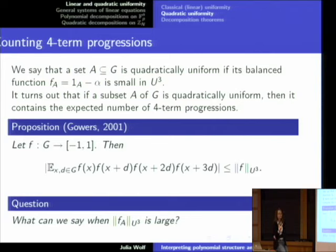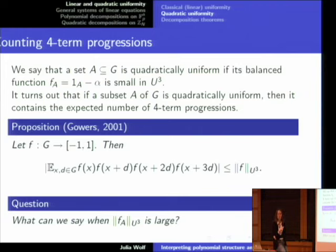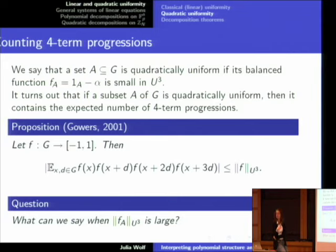This was one part of the dichotomy we saw for three-term progressions. If you're quadratically uniform, you get the expected number of four-term progressions. But what can we say if you have large U3 norm? In the case of three-term progressions, large U2 norm meant you correlated with a linear phase. So if you have large U3 norm, you might suspect you correlate with a quadratic phase — especially after observing that quadratic phases have maximal U3 norm themselves. You can compute and evaluate the U3 norm of a quadratic phase and it will always equal one.